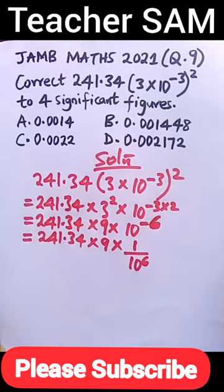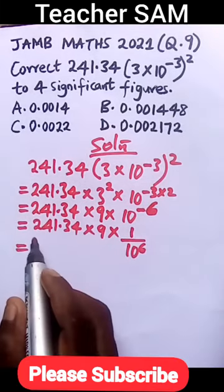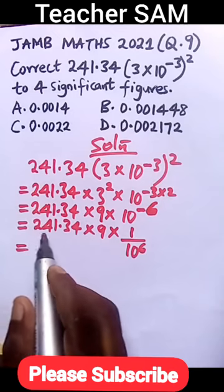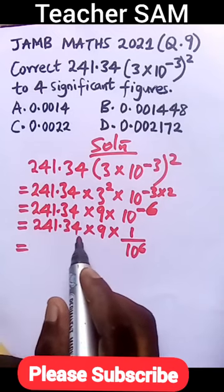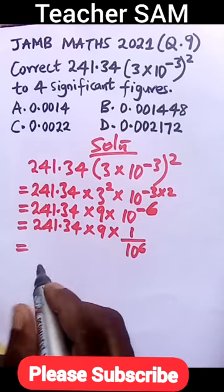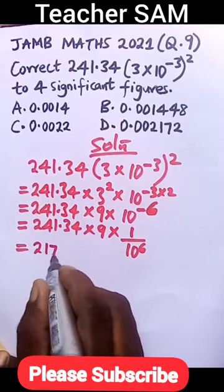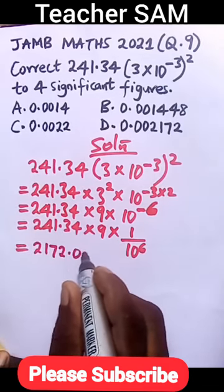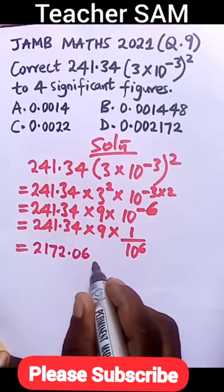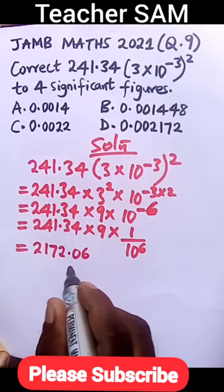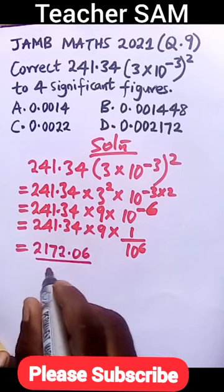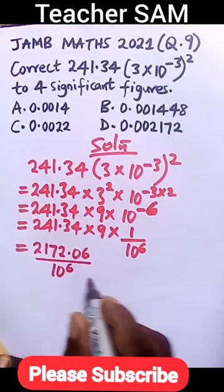When you multiply 241.34 times 9, you get 2172.06. Now that will be divided by 10^6.